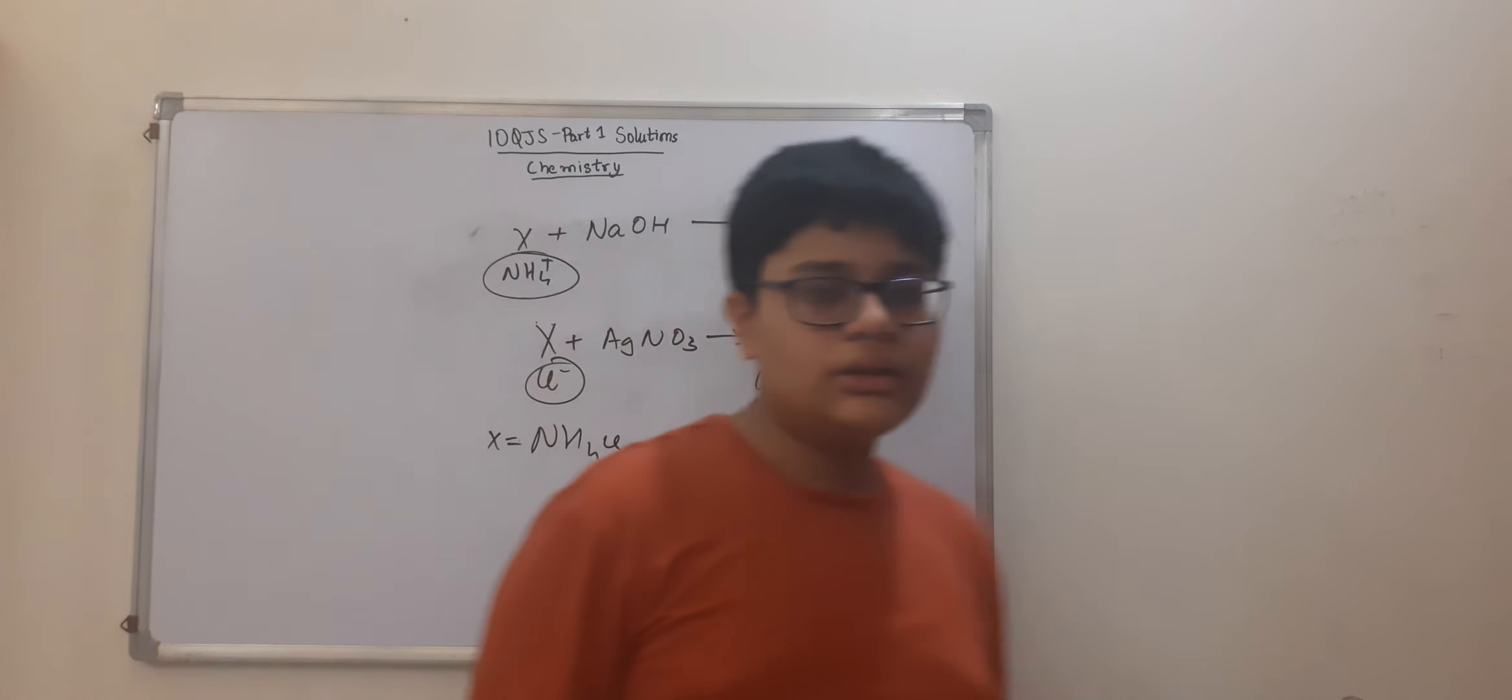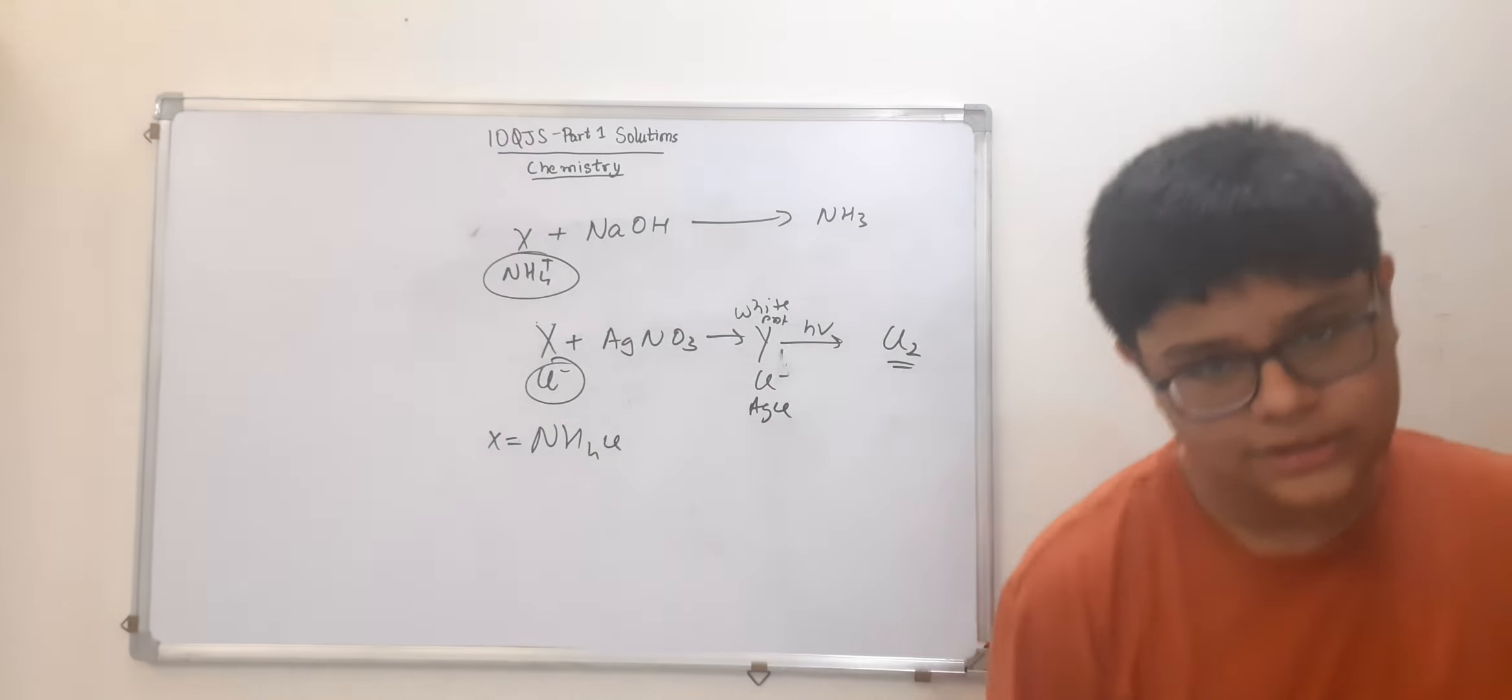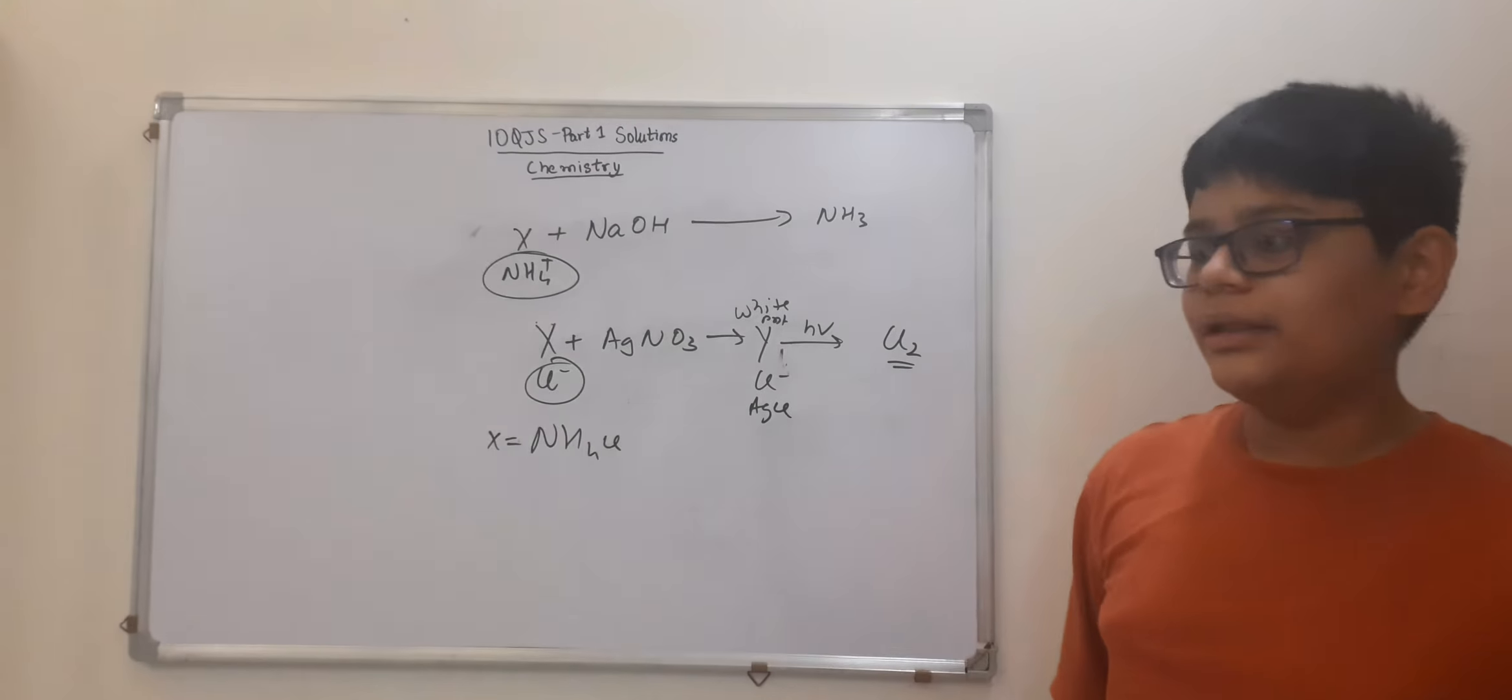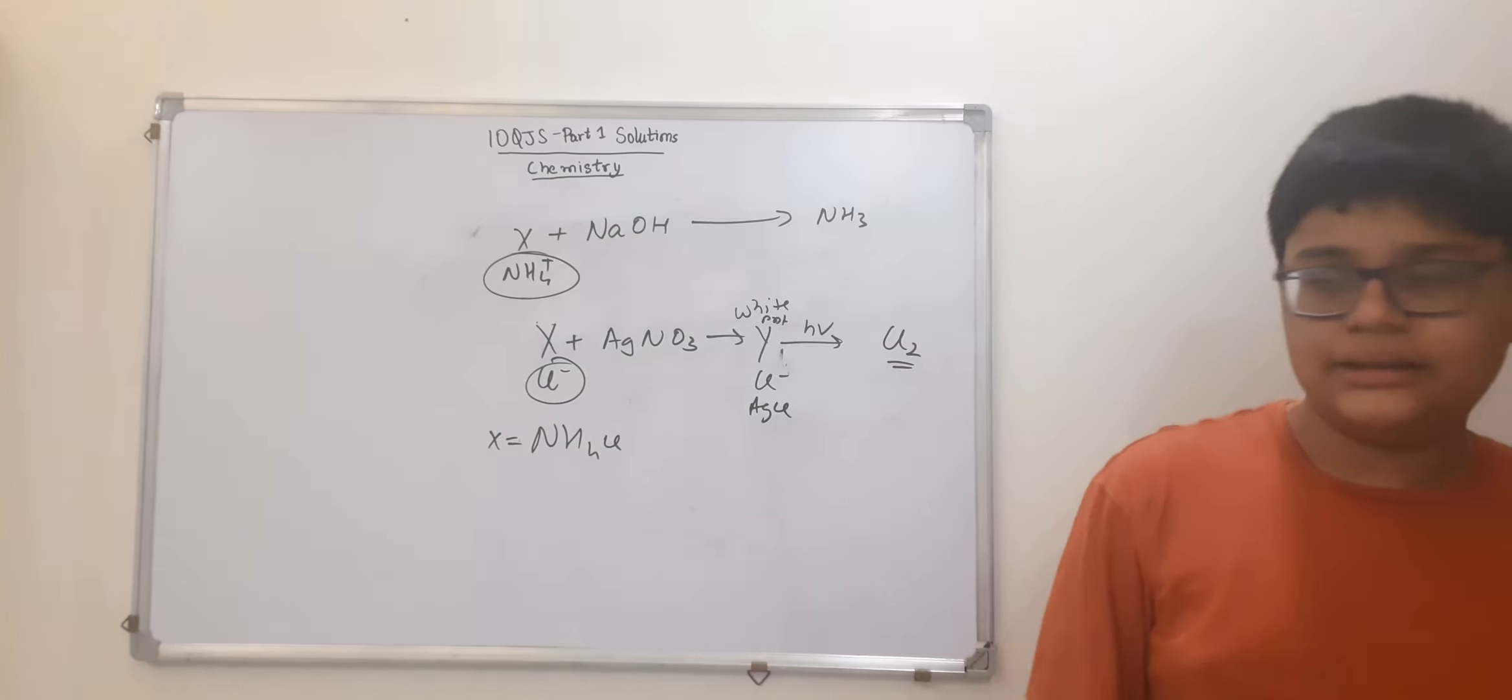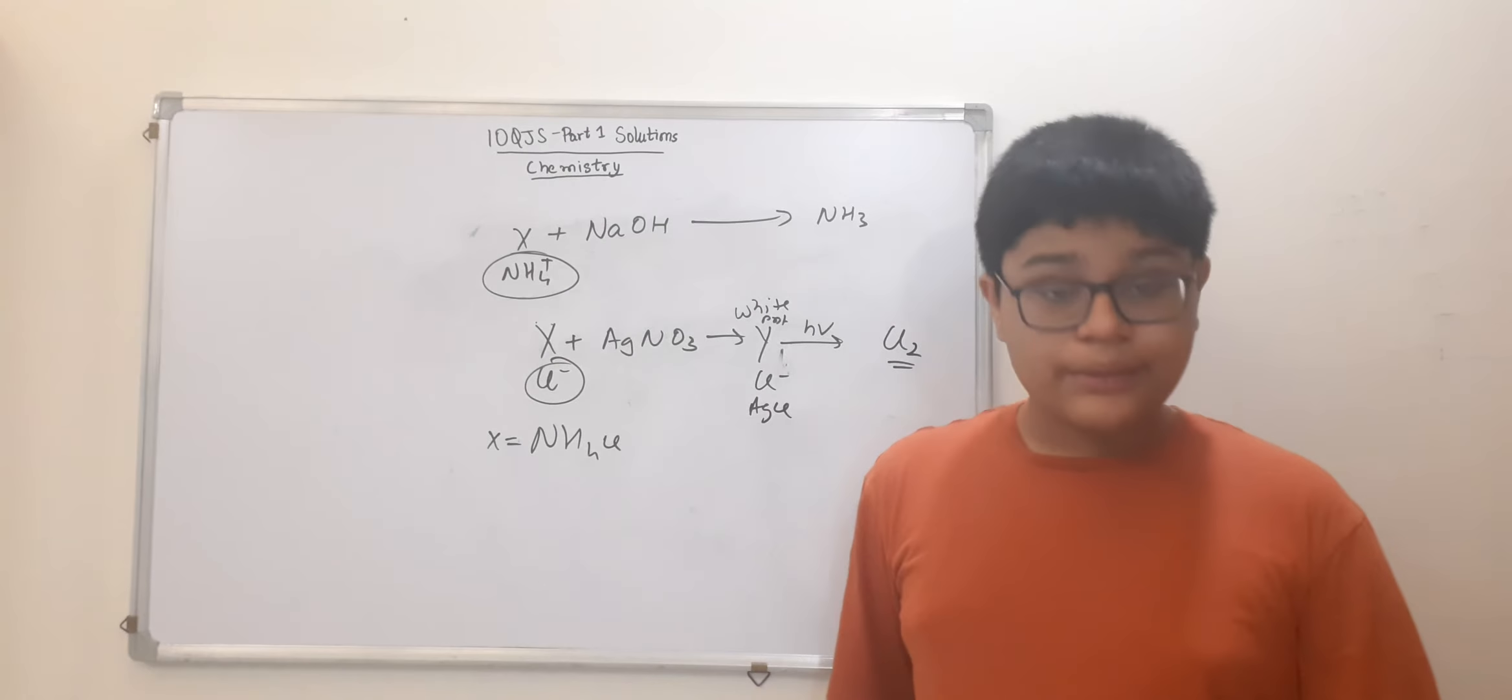It will be NH4Cl. So X is NH4Cl. Now an aqueous solution of X will be slightly acidic. Because NH4Cl is an acidic salt. And because it is made up of NH4OH and HCl neutralization. So it will be slightly acidic. So option B will be correct.